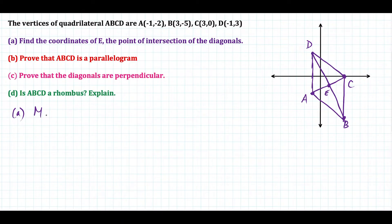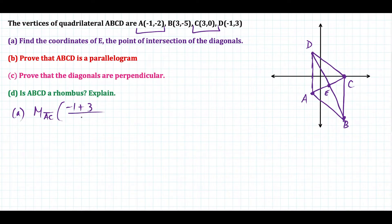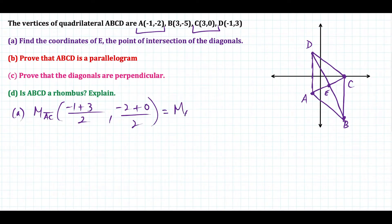We'll start with AC. The midpoint of diagonal AC uses these two points. We add the x coordinates: negative one plus three, divided by two. Then we add the y coordinates: negative two plus zero, divided by two. When we simplify, two divided by two is one, and negative two over two is negative one. So the midpoint of AC is one, negative one, which matches point E in the picture.